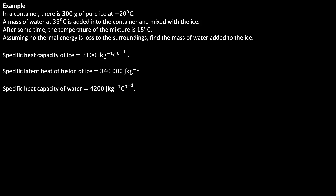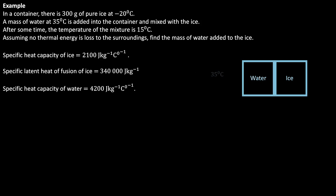We are given the specific heat capacity of ice, the specific latent heat of fusion of ice, and the specific heat capacity of water. To answer this question, we need to remember that thermal energy always flows spontaneously from an object with higher temperature to an object with lower temperature when placed in thermal contact. In our case, the ice is in thermal contact with the water. Since the water is at a higher temperature of 35 degrees Celsius and the ice is at a lower temperature of minus 20 degrees Celsius, thermal energy will flow from the water to the ice. Eventually, an equilibrium temperature will be reached, and the equilibrium temperature has been given here as 15 degrees Celsius.